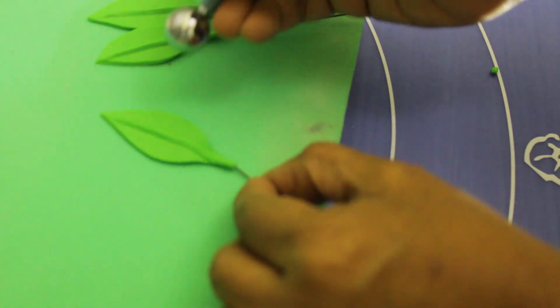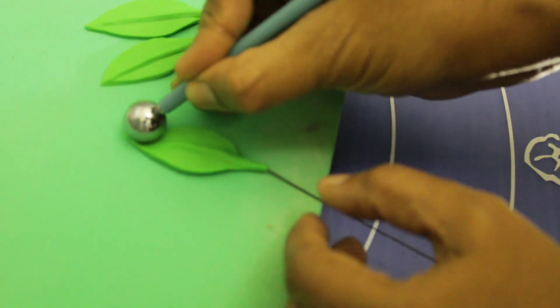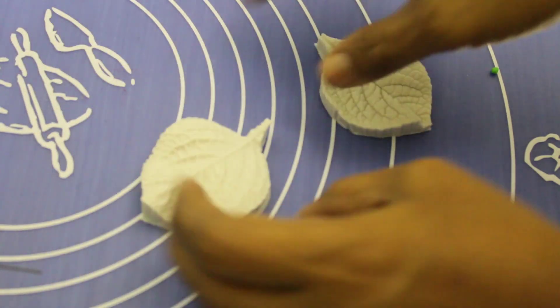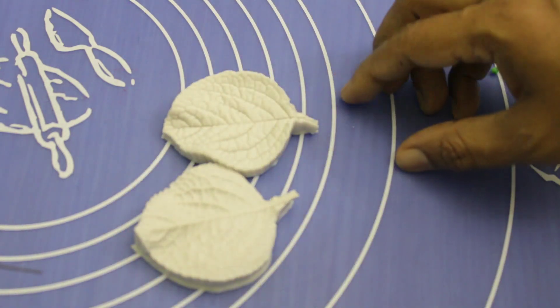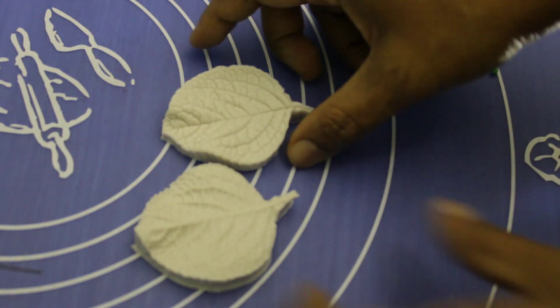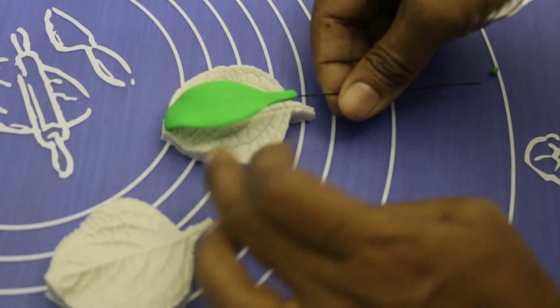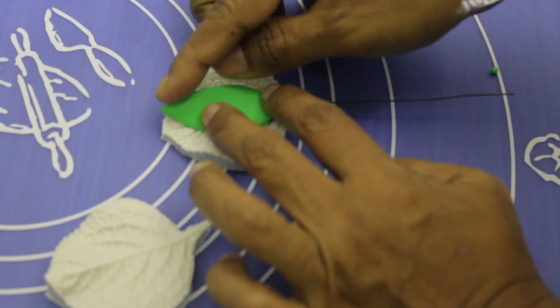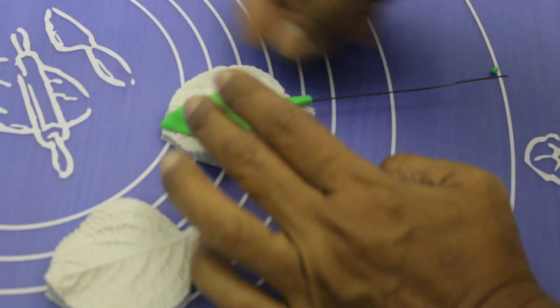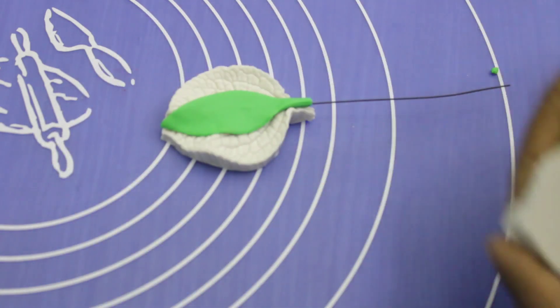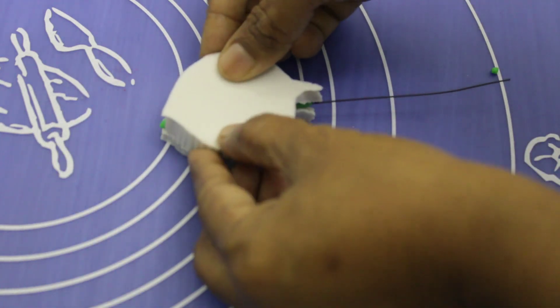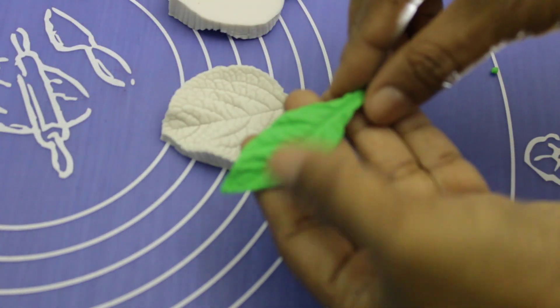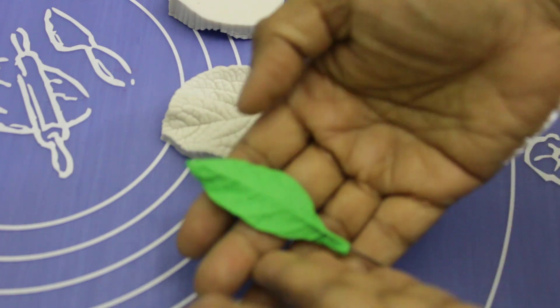And push it inside here. I am using this ball tool. So make it here and all the way. Now I am using this veiner for leaves. This one is very beautiful. So I want to show you how you can use this veiner. I place them here like this, and a little bit this side.